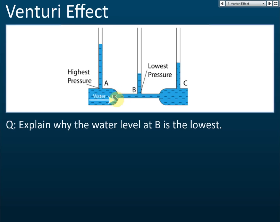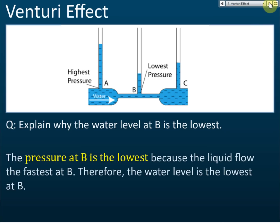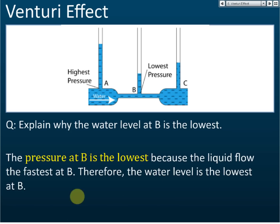So that is the Venturi effect — a constricted area makes the water flow faster and hence reduces the pressure. The question asks: explain why the water level at B is the lowest. The pressure at B is the lowest because the liquid flows the fastest at B, as it is a constricted area with a small diameter. According to Bernoulli's principle, if the liquid flows faster, the pressure is lower. Therefore, the water level is the lowest at B.